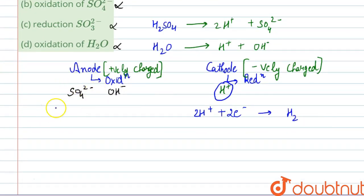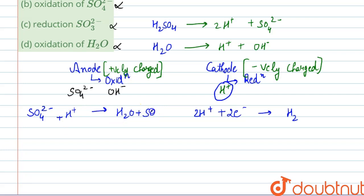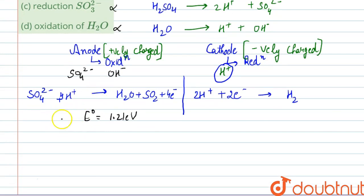Now let's check the reaction at the anode. There are two possibilities: oxidation of SO₄²⁻ and oxidation of OH⁻. For SO₄²⁻, the reaction is: SO₄²⁻ + 4H⁺ + 2e⁻ gives H₂O + SO₂, releasing 4 electrons. The standard reduction potential for this reaction is 1.21 V.